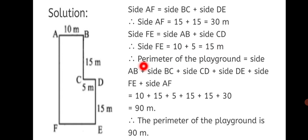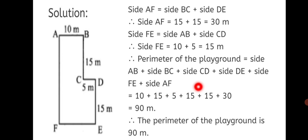Now we can write the perimeter. Perimeter of the playground equals the sum of all sides: AB + BC + CD + DE + FE + AF = 10 + 15 + 5 + 15 + 15 + 30 = 90 meters. Therefore, the perimeter of the playground is 90 meters. We found the missing sides by looking at the sides opposite to them, then added all sides to get the perimeter.